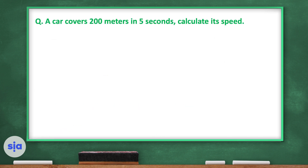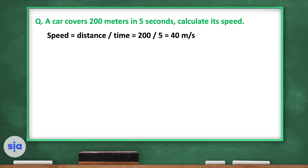Here is a question: a car covers 200 meters in 5 seconds — calculate the speed. Using the equation speed equals distance divided by time, we divide 200 meters by 5 seconds, which gives 40 meters per second.